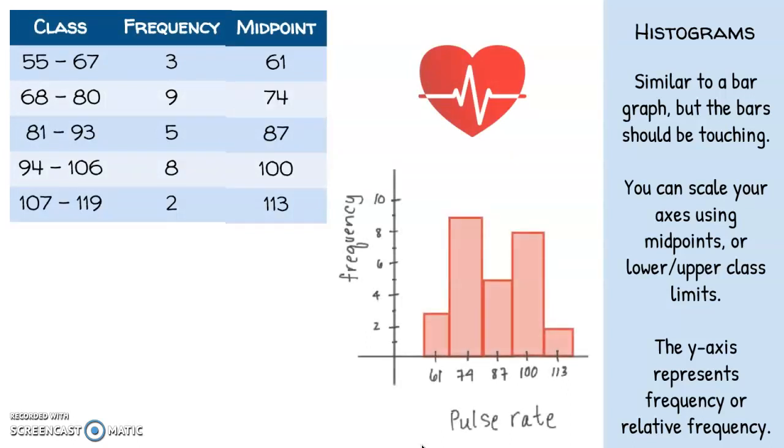You can scale your axes using the midpoints of a frequency table or even the lower and upper class limits. The y-axis of a histogram always represents frequency or relative frequency, and the x-axis is going to represent your data values, what category or class they belong to.